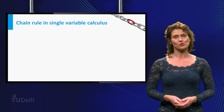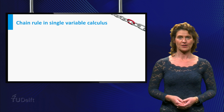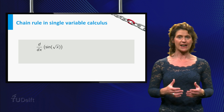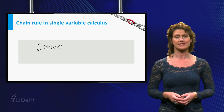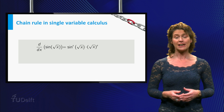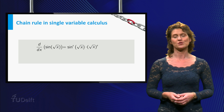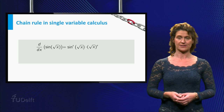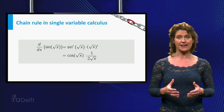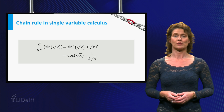Let's recall the chain rule for a composite function of one variable. For example, if you want to compute the derivative of the sine of the square root of x, it is the derivative of the sine evaluated at the square root of x times the derivative of the square root of x, which is equal to the cosine of the square root of x times 1 over 2 times the square root of x.